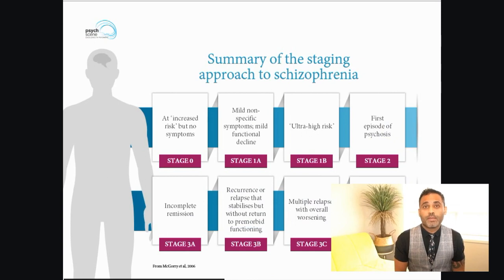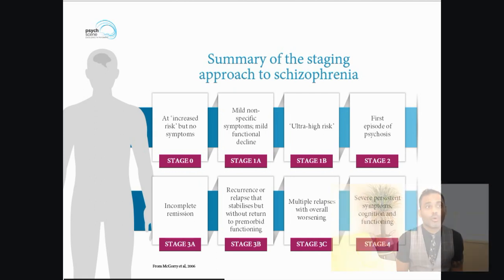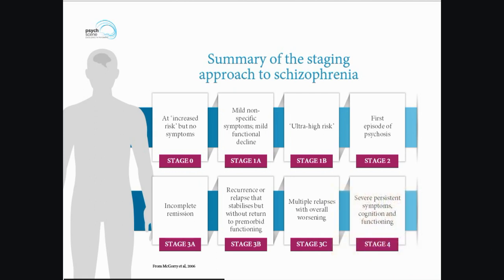When we think about schizophrenia as a whole, we know that many patients present with prodromal symptoms in the early stages of the illness. As a result of this, there has been a staging approach proposed by Professor Pat McGorry. This is a summary of the staging approach to schizophrenia, all the way from stage 0 to stage 4. Stage 0 is an individual with increased risk but no symptoms, while stage 4 is someone with severe persistent symptoms with impact on cognition and functioning.